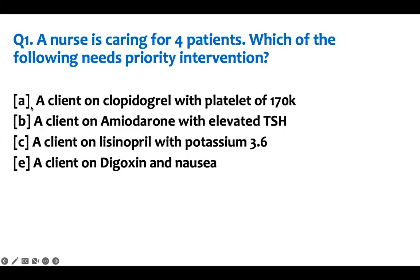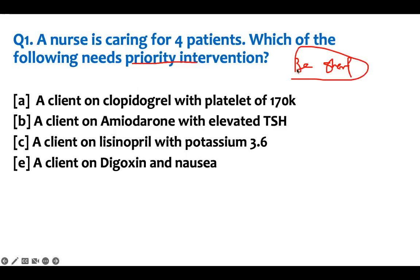We have five questions. The first one: a nurse is caring for four patients — which of the following need priority intervention? Whenever we see 'need priority intervention' or 'immediate/first,' we're talking about prioritization. Check my B-Sharp video on the channel linked below. B-Sharp means you are being careful and paying attention to things that could harm the patient. Every symptom is evaluated, but some demand more attention as your priority.